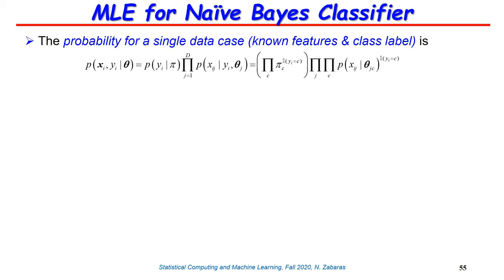I will take one point xi, where i denotes one training point, and yi is the label for that point. Using the product rule of probability, we write this as p(xi | yi) times p(yi). The probability p(y | pi), if we knew the probability for each class label, can be written as a product using indicator functions. If point i belongs to class 1, only pi_1 survives — the exponent is zero for all other classes, giving those terms value 1.